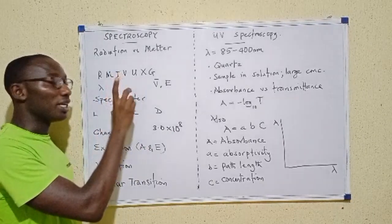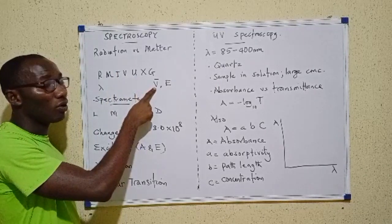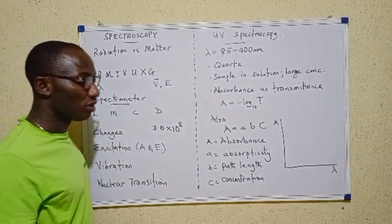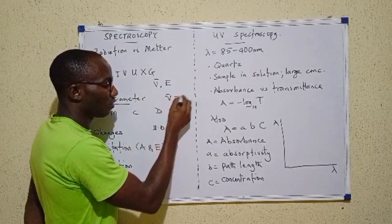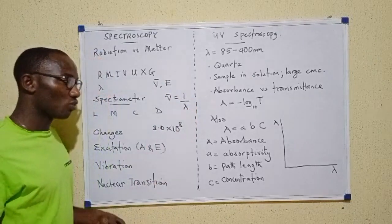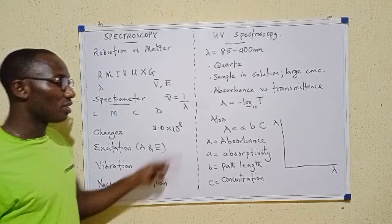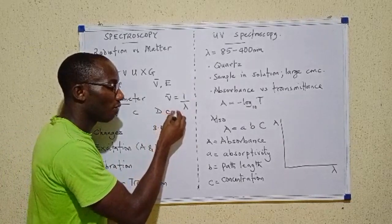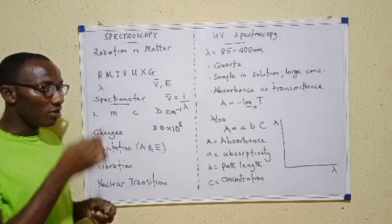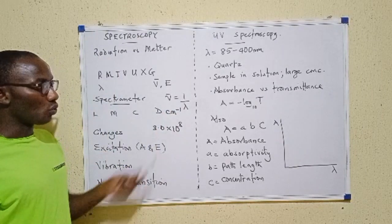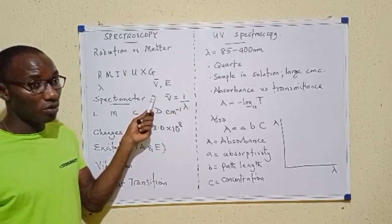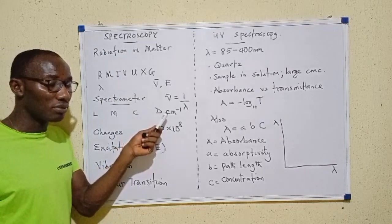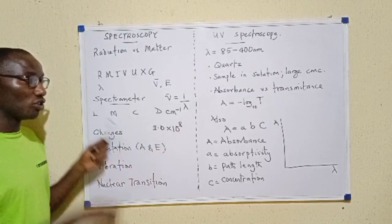Frequency in spectroscopy is preferably measured in terms of what we call wave number — that symbol, the V with a strike on top. Wave number, by formula, is equal to the inverse of wavelength. So when we invert wavelength, we get wave number. That means if wavelength is in centimeters, then our wave number is going to be in cm⁻¹, pronounced reciprocal centimeter. Wave number can be in reciprocal centimeter or reciprocal meter, depending on the units of wavelength.